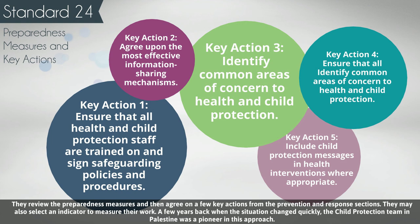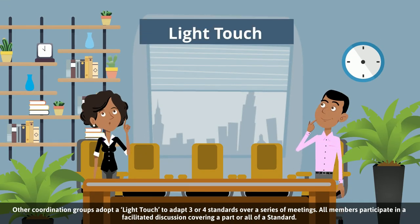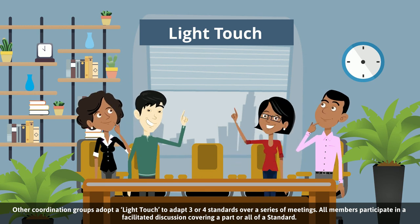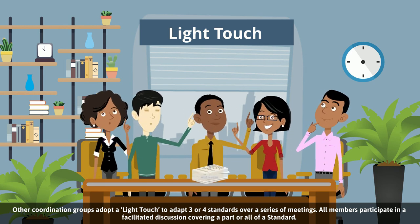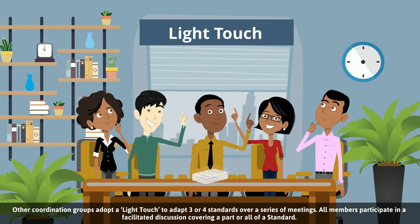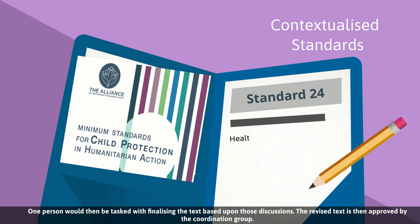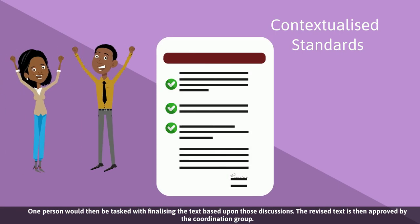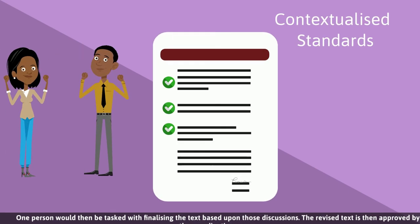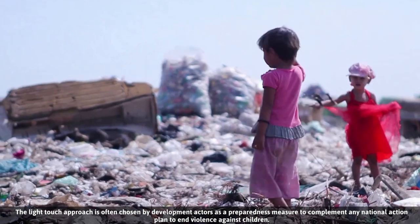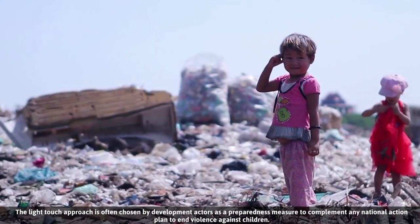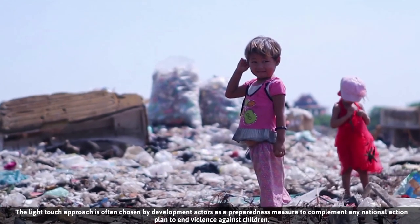A few years back, when the situation changed quickly, the child protection team in Palestine was a pioneer in this approach. Other coordination groups adopt a light touch to adapt three or four standards over a series of meetings. All members participate in a facilitated discussion covering all or part of a standard. One person would then be tasked with finalizing the text based upon those discussions, and the revised text is then approved by the coordination group. The light touch approach is often chosen by development actors as a preparedness measure to complement any national action plan to end violence against children.